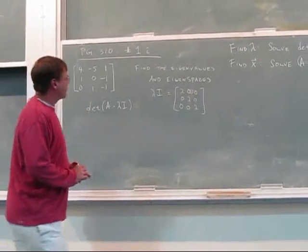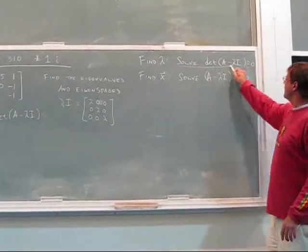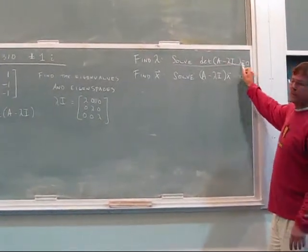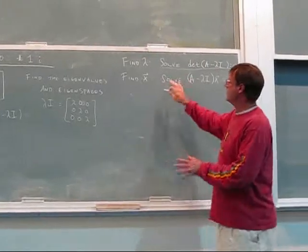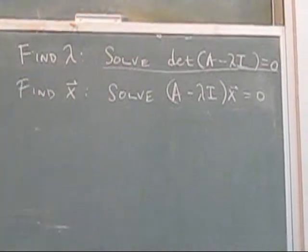All right, the first step is to find the eigenvalues. That is found by using this equation here: the determinant of A minus lambda I equals 0. So you can't do anything with the eigenspaces or eigenvectors until you have the eigenvalues. So let's get that first.